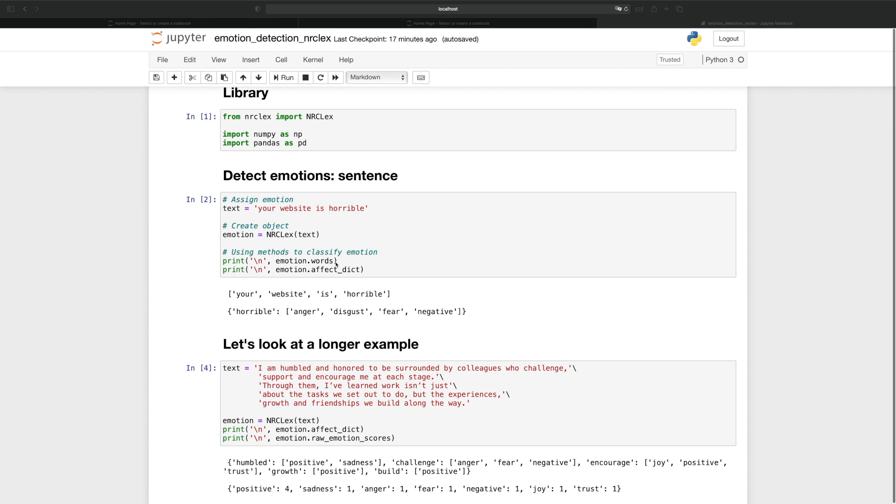Then we invoke the methods from NRC-Lex. The first one is words. It's going to break down the original sentence into a sub-component list of words. And then Affect Dictionary is going to tell us that out of these four words, the algorithm recognized the word horrible, and horrible is associated with these emotions.